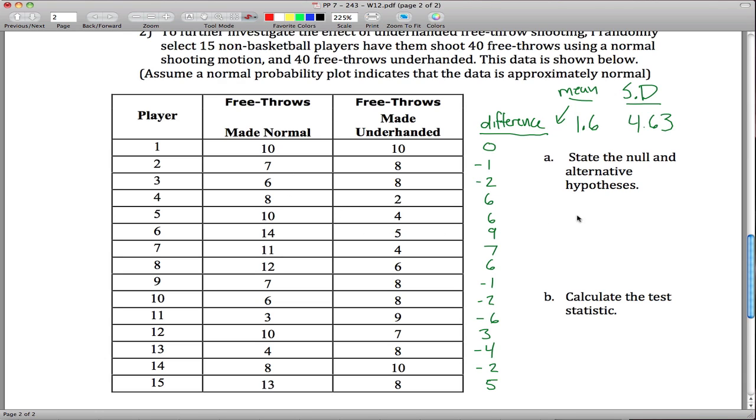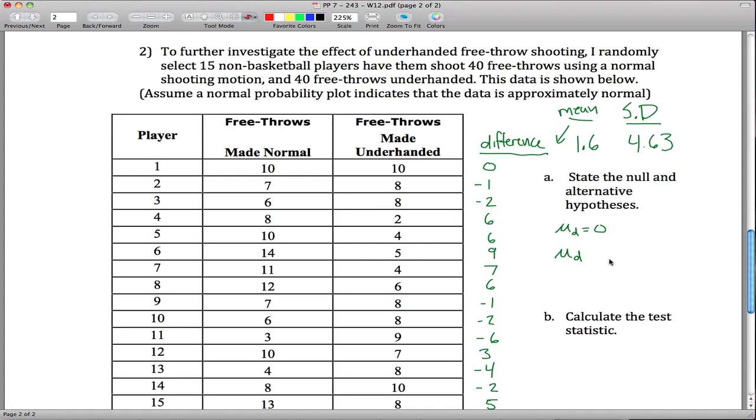So I want to state the null and alternative hypothesis. The null hypothesis, we could write as this, that mu sub d is equal to 0 and the alternative hypothesis is that mu sub d, talking about the effect of underhand shooting here, so again, it would be does not equal 0. And where mu sub d here is saying mu of the difference of this column here, so the difference between how many you'd make normally and underhanded.